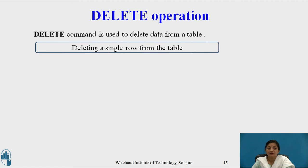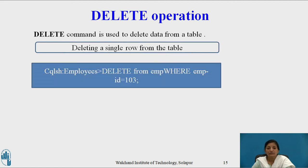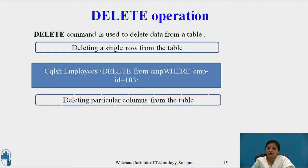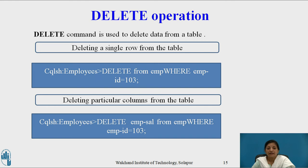For example, DELETE FROM employee WHERE employee_ID = 103 deletes only one row from the employee table where employee ID equals 103. For column deletion: DELETE employee_salary FROM employee WHERE employee_ID = 103 deletes only the employee_salary column for employee 103, so only that column value is removed from the table.